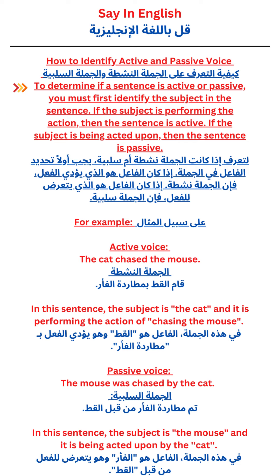To determine if a sentence is active or passive, you must first identify the subject in the sentence. If the subject is performing the action, then the sentence is active. If the subject is being acted upon, then the sentence is passive.